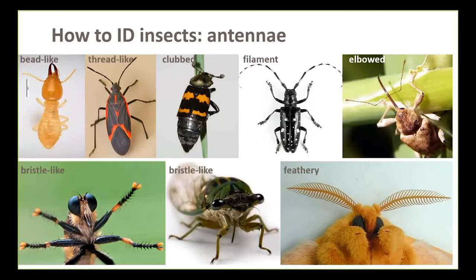In addition to wings and mouthparts, antennal types can help you identify look-alike species. Antennae can range from bead-like to thread-like to clubbed, and some insects even have fancy feather-like antennae. If you handle specimens gently, you'll be able to see these structures right between the eyes.